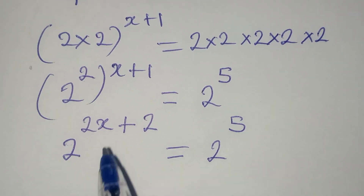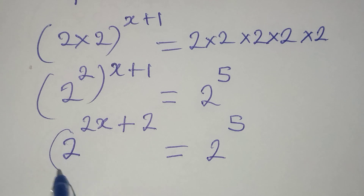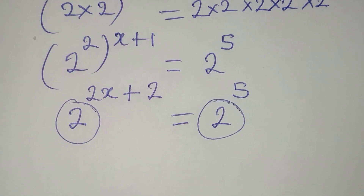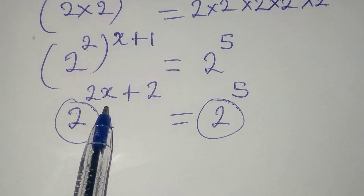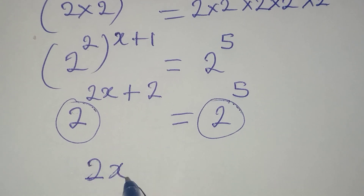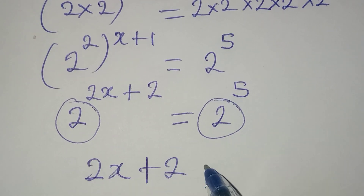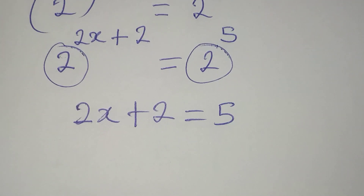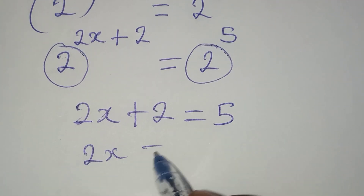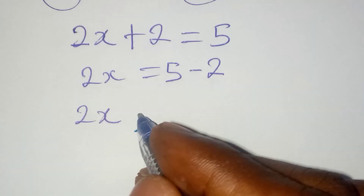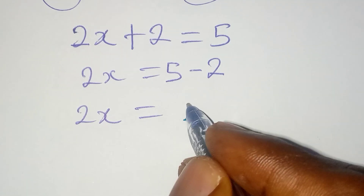The reason for breaking it down like this is for us to have the same base. Now we have the same base of 2, which means we can equate the powers. So 2x plus 2 is equal to 5, and then 2x will be equal to 5 minus 2, giving us 2x equals 3.